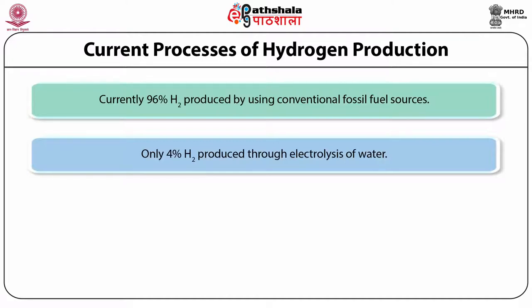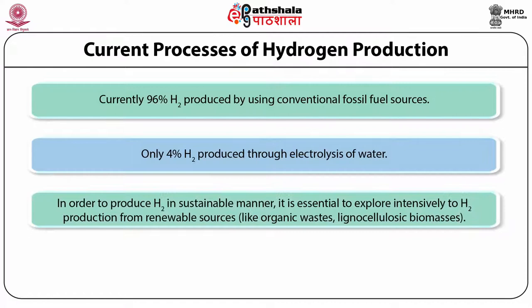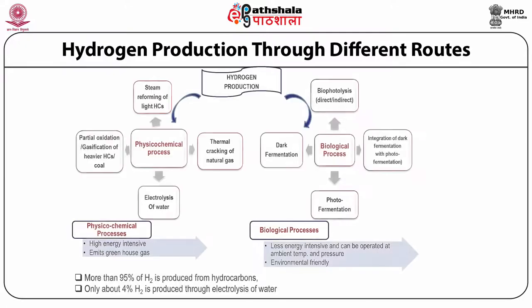Hence, there is a dire need now to produce hydrogen from processes which should not depend on conventional fossil fuel sources. Then only the overall hydrogen production process can be sustainable and renewable. In order to produce hydrogen in a sustainable manner, it is very essential to explore intensively to produce hydrogen from renewable sources such as organic waste and lignocellulosic biomass. Here we will learn about the different processes of hydrogen through physicochemical processes and compare the hydrogen production processes through physicochemical routes with biological hydrogen production processes.